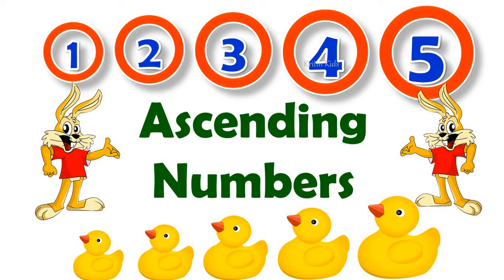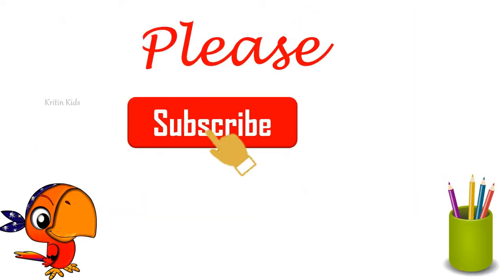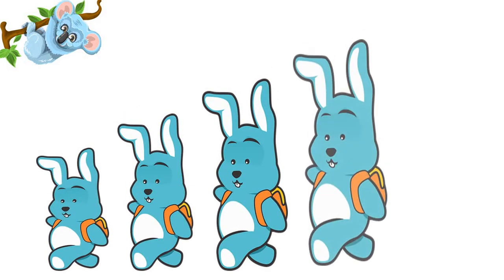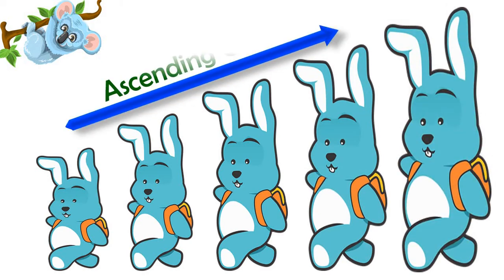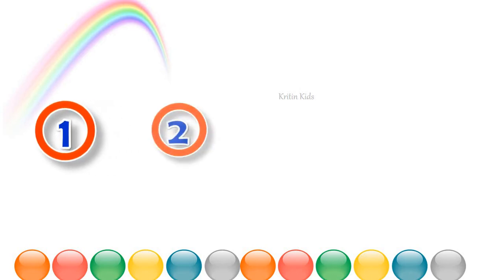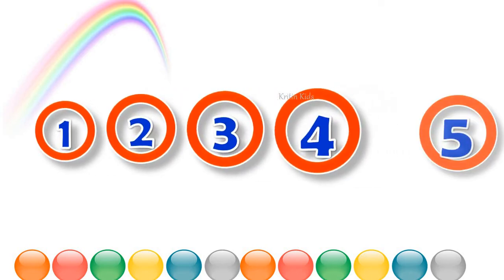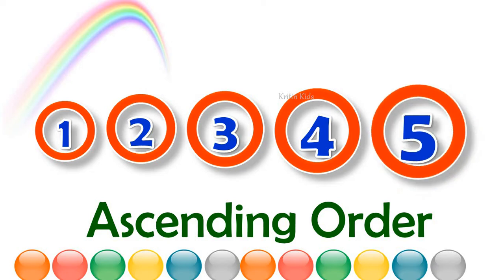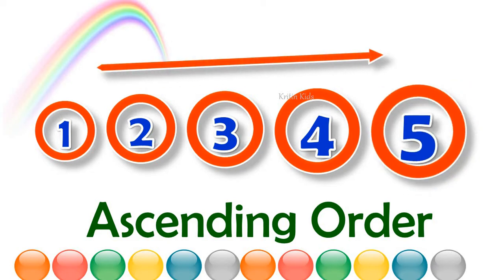Ascending Numbers. When we arrange any objects or numbers from smaller to the greater, it is called ascending order. As we can see, all these bunnies have been arranged in ascending order from smaller to the larger one. Similarly, these numbers are arranged in ascending order: 1, 2, 3, 4, 5 — smaller number to the bigger number. It is called ascending order.